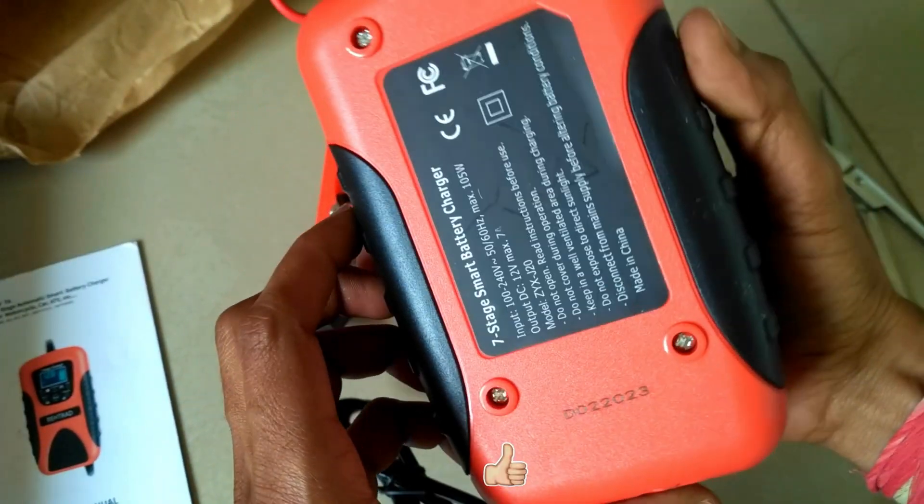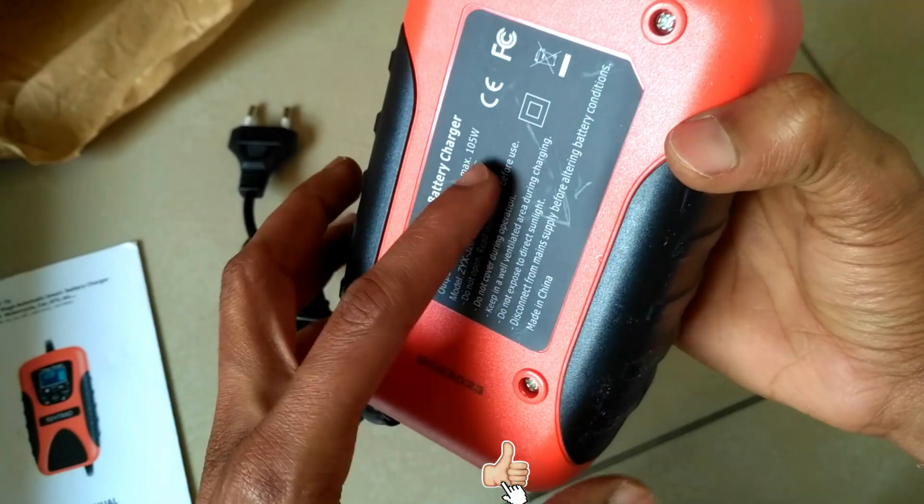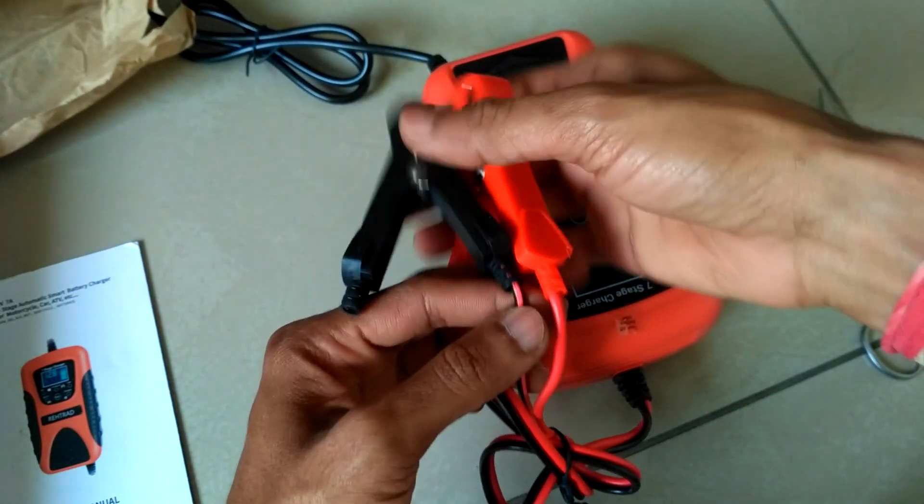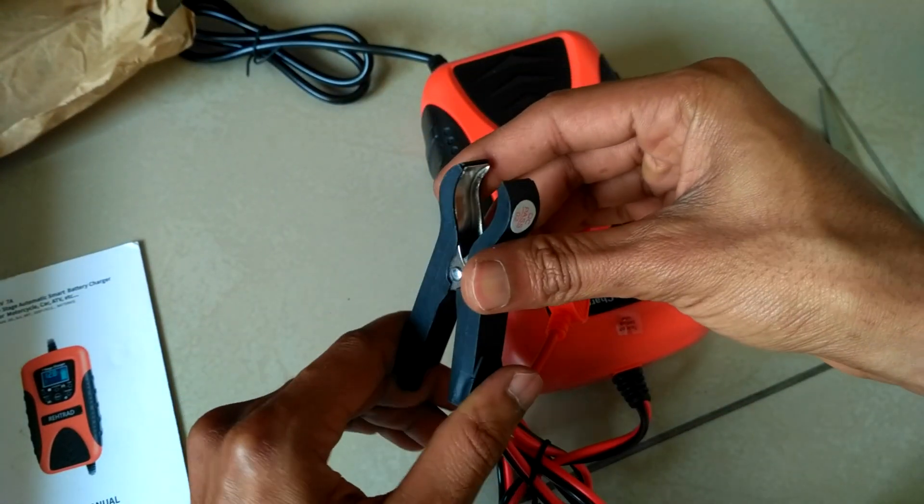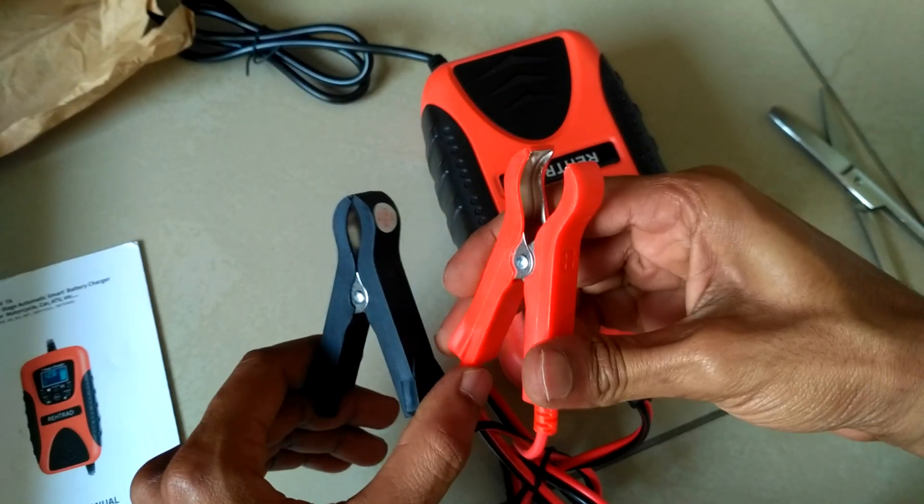And here we see scratches at the bottom side of the product. Since it's used to charge a car battery as well, for this reason the crocodile clips are larger.